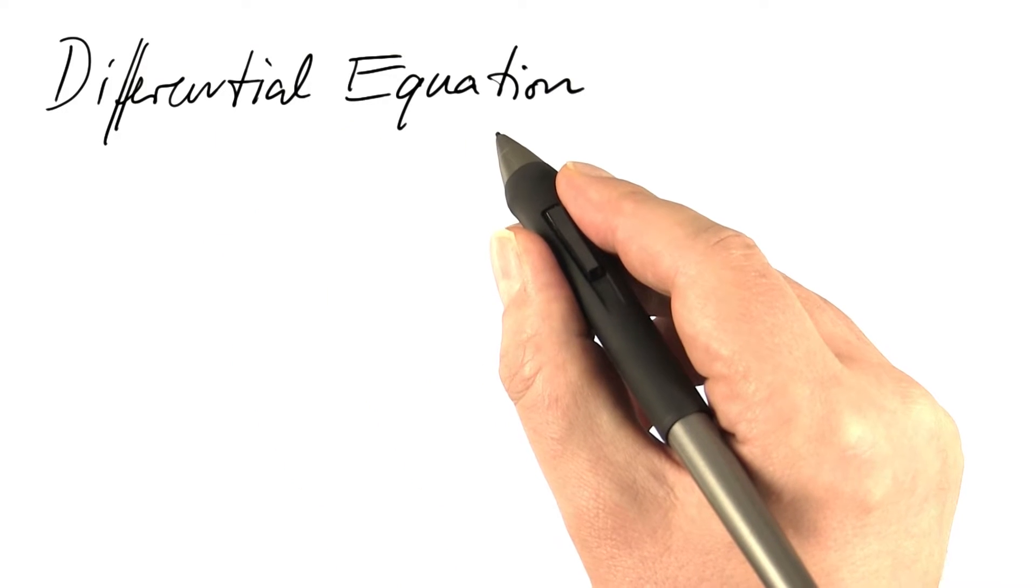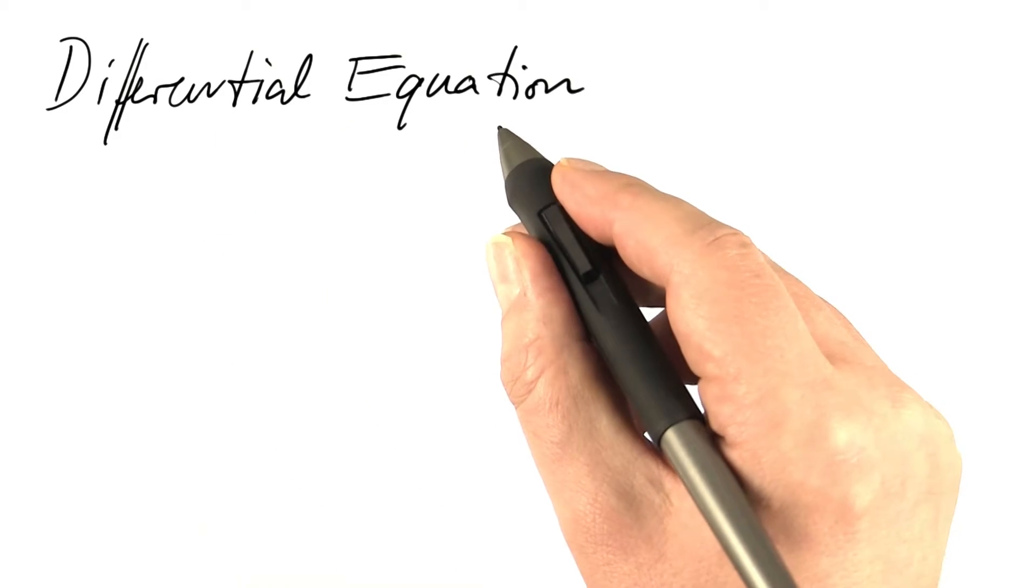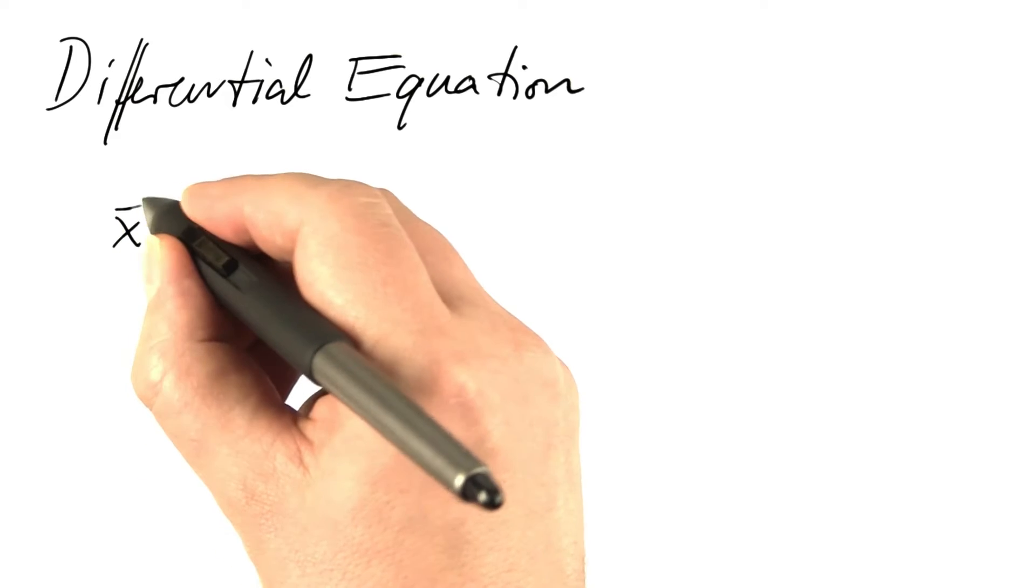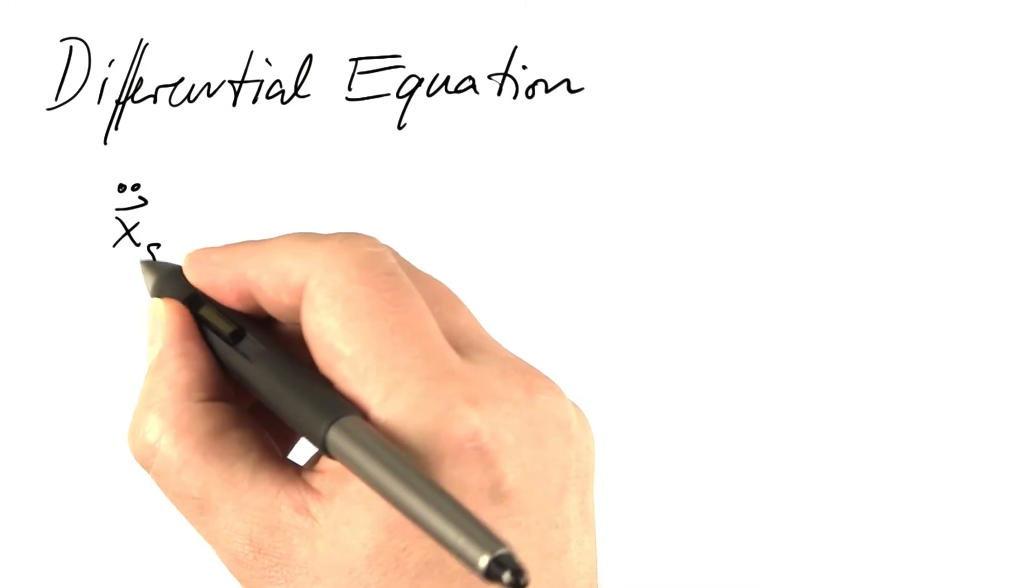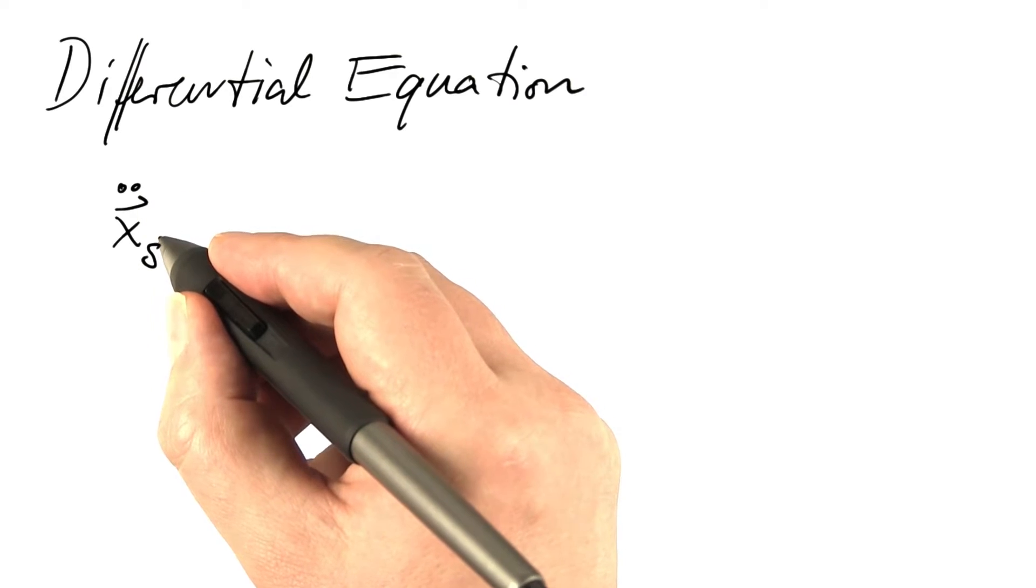So now we have reached our first real-world differential equation. The second derivative of the position vector of the spacecraft, which is its acceleration vector,